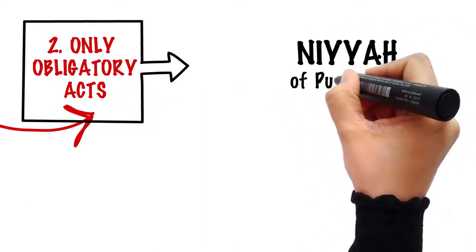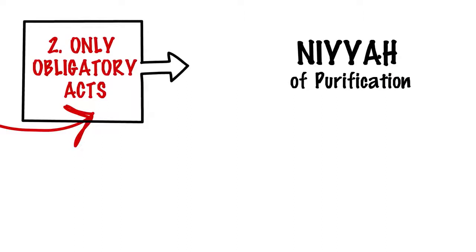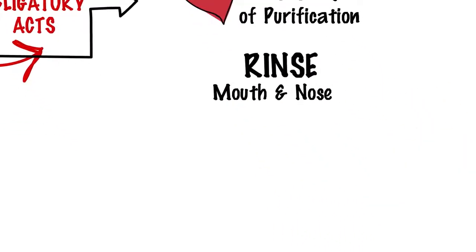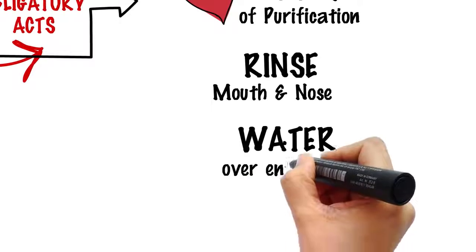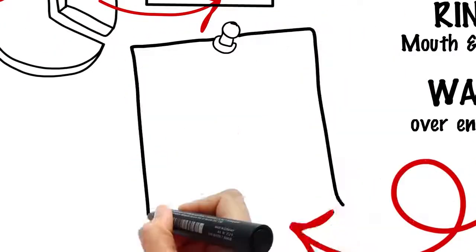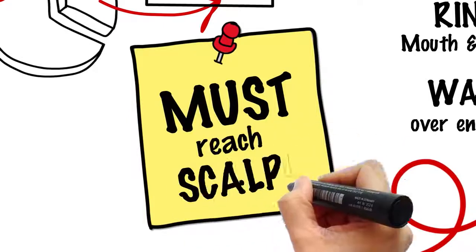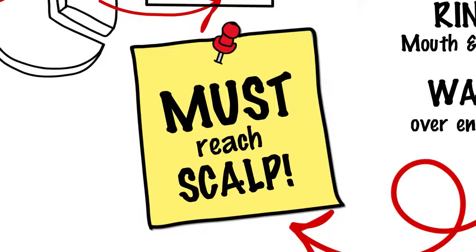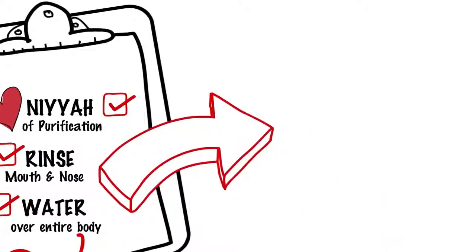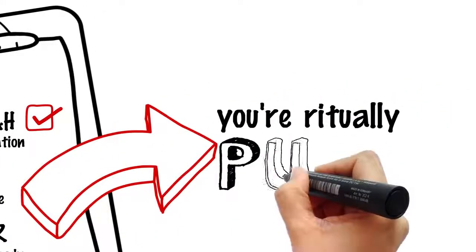A beforehand Niyya - intention - that you are taking this bath to purify yourself from the major ritual impurity. Rinsing your mouth and nose, and letting water run over your entire body at least once. Make sure it reaches every part of it, even your scalp under the thick hair. If you manage to do this much, then you have purified yourself from the major ritual impurity.